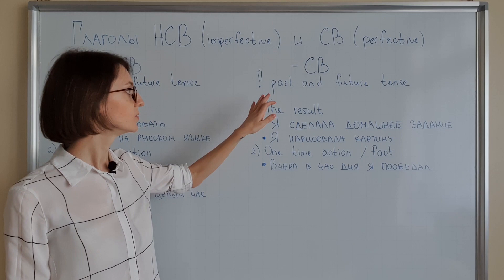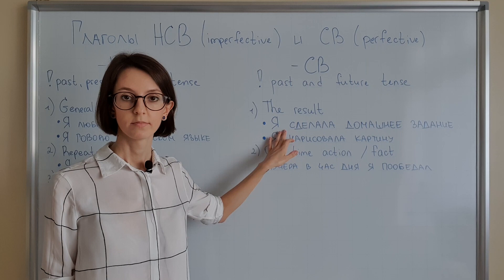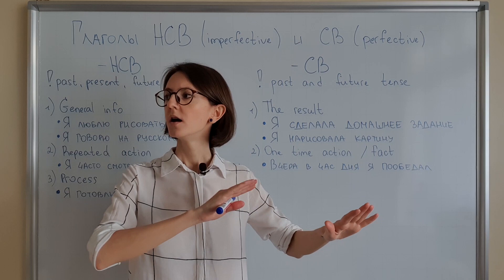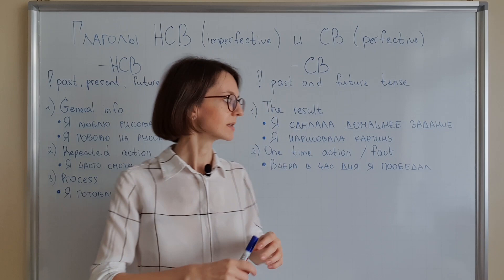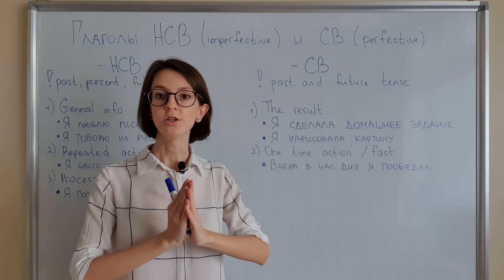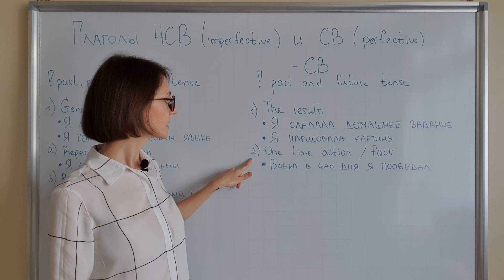Moving to SV. SV is always about the result. Because we use it in the past or in the future, we need the result. Я сделала домашнее задание — finished. I closed all my books and notebooks. Done. I can watch TV. Я нарисовала картину — the painting is done, we can put it on the wall. We have the result. Result is always SV.